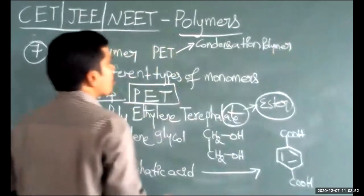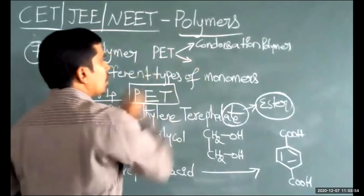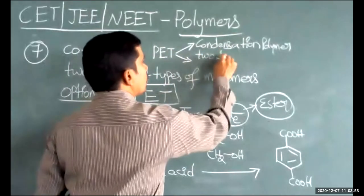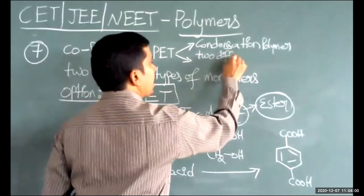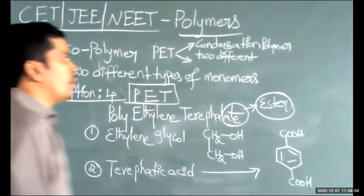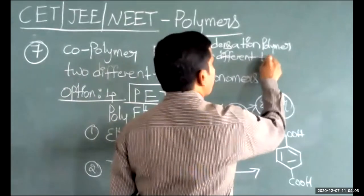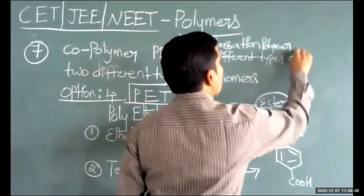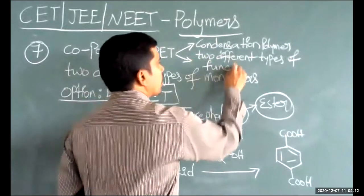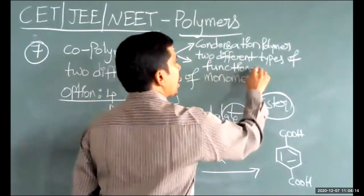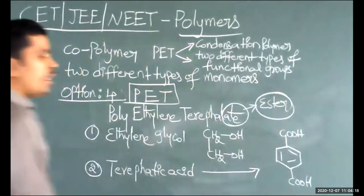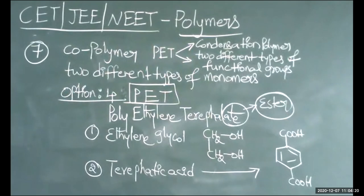To become a condensation polymer, the monomers must contain two different types of functional groups. In this case, the monomers must contain two different types of functional groups for condensation polymerization to occur.